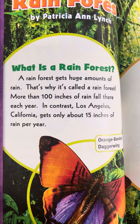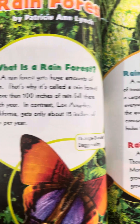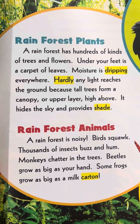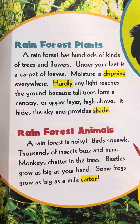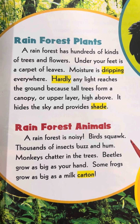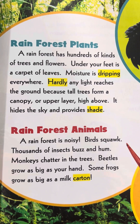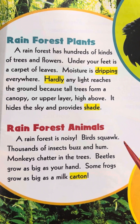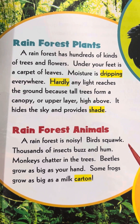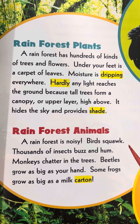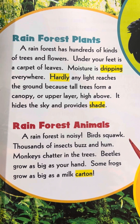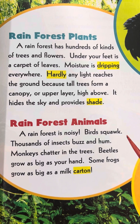Rainforest plants: A rainforest has hundreds of kinds of trees and flowers. Under your feet is a carpet of leaves. Moisture is dripping everywhere. Hardly any light reaches the ground because trees form a canopy, or upper layer, high above — it hides the sky and provides shade.